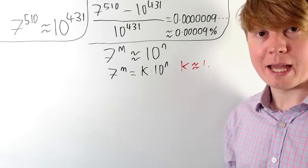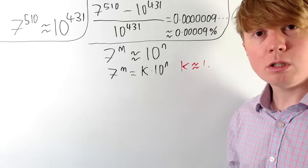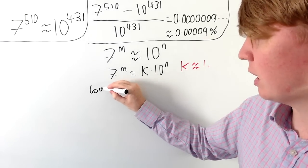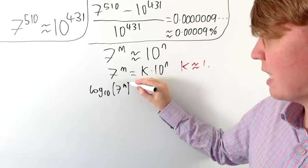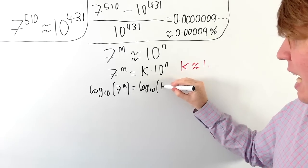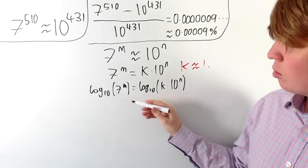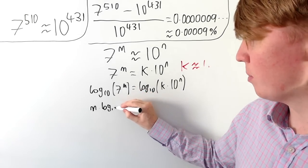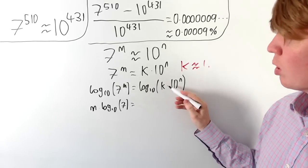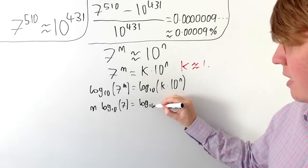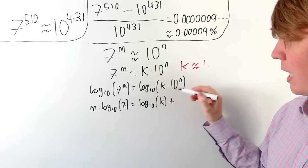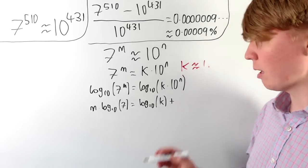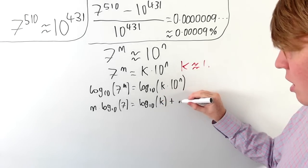To see how we can choose values of m and n to get a good approximation, we'll do some manipulation of this equation using logarithms. If we take log base 10 of both sides, we get log base 10 of 7 to the m equals log base 10 of k times 10 to the n. Using the laws of logarithms, we take out the power of m: m times log base 10 of 7 equals log base 10 of k plus log base 10 of 10 to the n. And log base 10 of 10 to any power is just that power, so log base 10 of 10 to the n is just n.